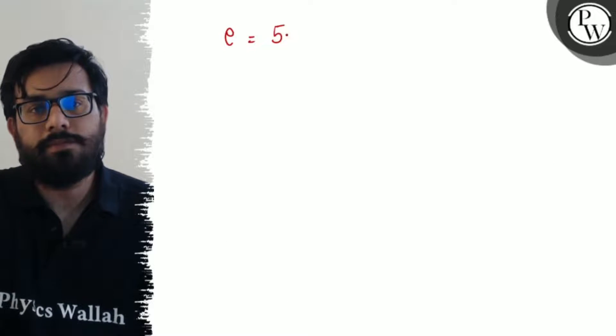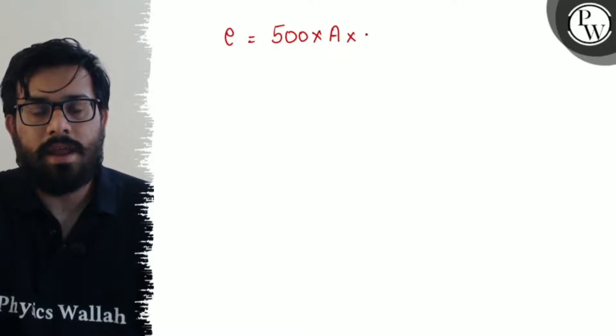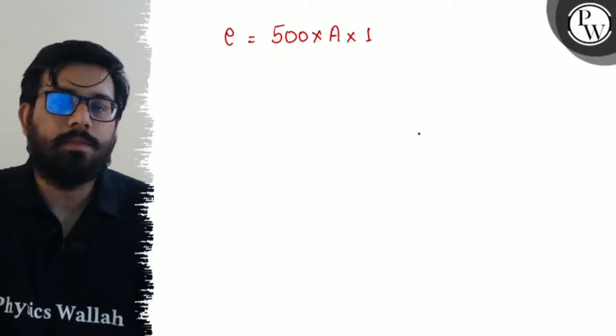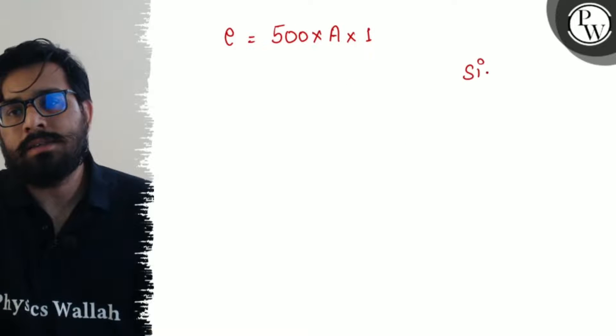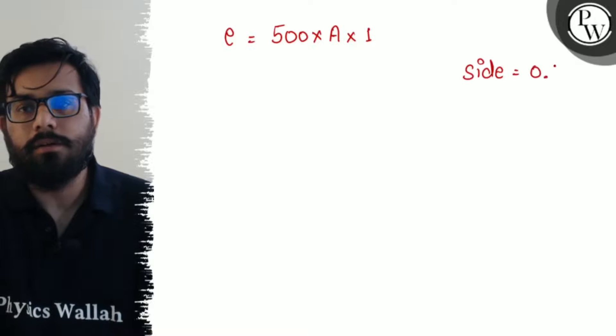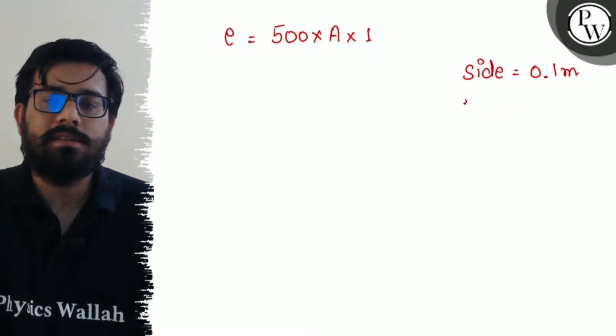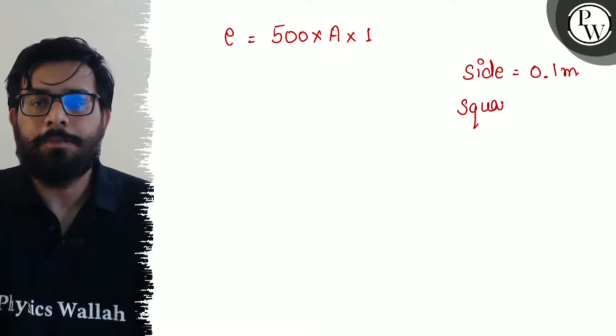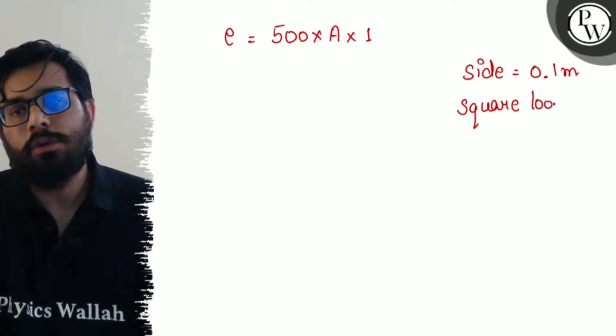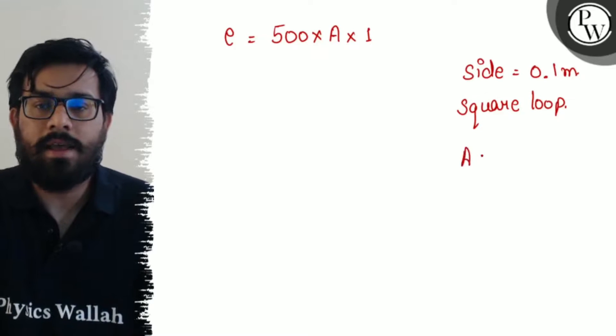So E equals... the number of turns is given as 500. dB/dt is 1 tesla per second, and we have side as 0.1 meters. Since this is a square loop, we can use area equals side squared.